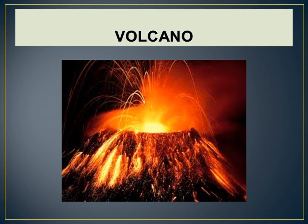When a volcano erupts, the magma comes out. When magma reaches the surface of the earth it is called lava. So the inner molten rock is called magma, and when it reaches the earth's surface it is called lava. Underline both magma and lava — these are the main keywords of this chapter.